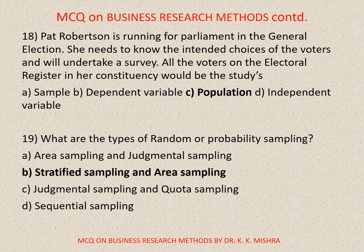Question number 18. Pat Robertson is running for parliament in the general election. She needs to know the interests and choices of voters and will undertake a survey. All the voters on the electoral register in her constituency would be this study's: A. Sample, B. Dependent variable, C. Population, D. Independent variable. Correct option is C. Population.